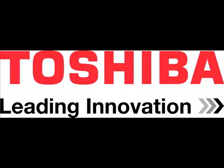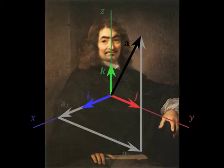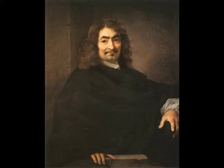The manufacturer of Cartesian-coordinated robots is Toshiba Corporation. Cartesian robots originated from the Cartesian coordinate system developed by Descartes, a mathematician who developed the coordinate plane to describe the positions of objects.